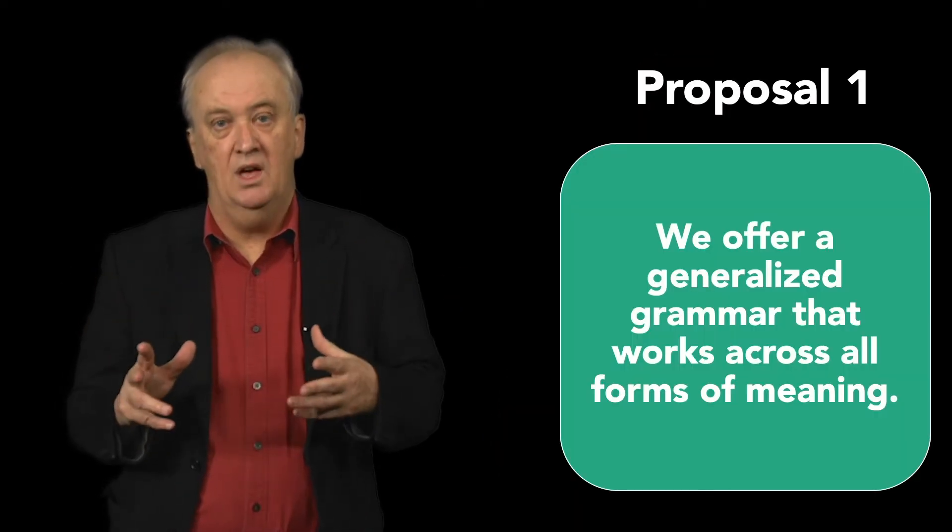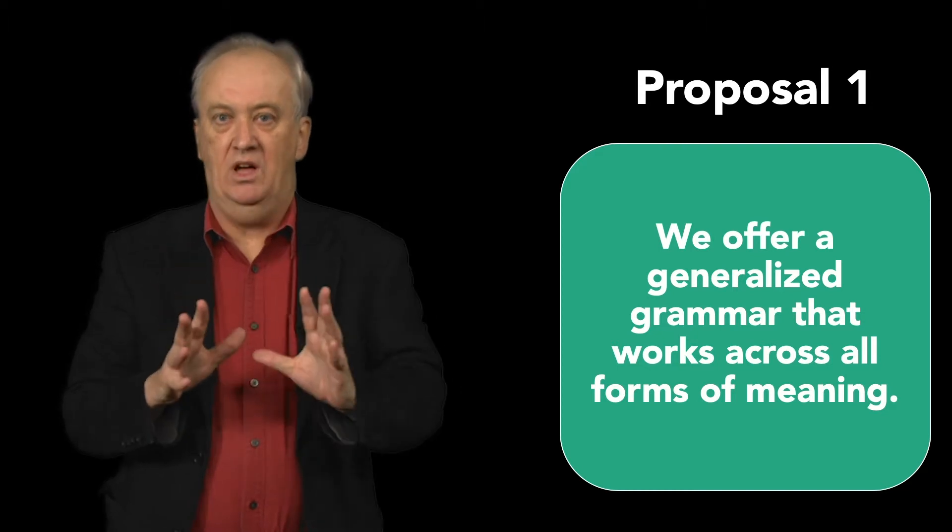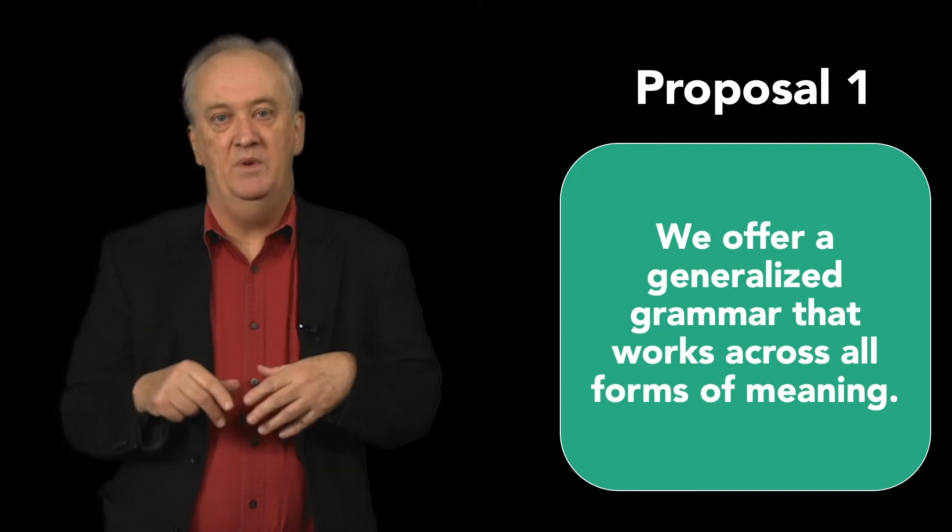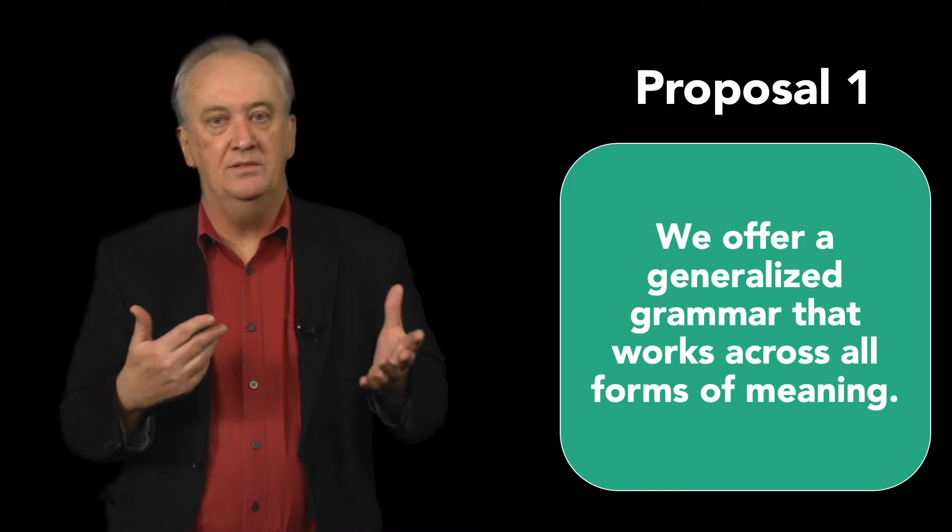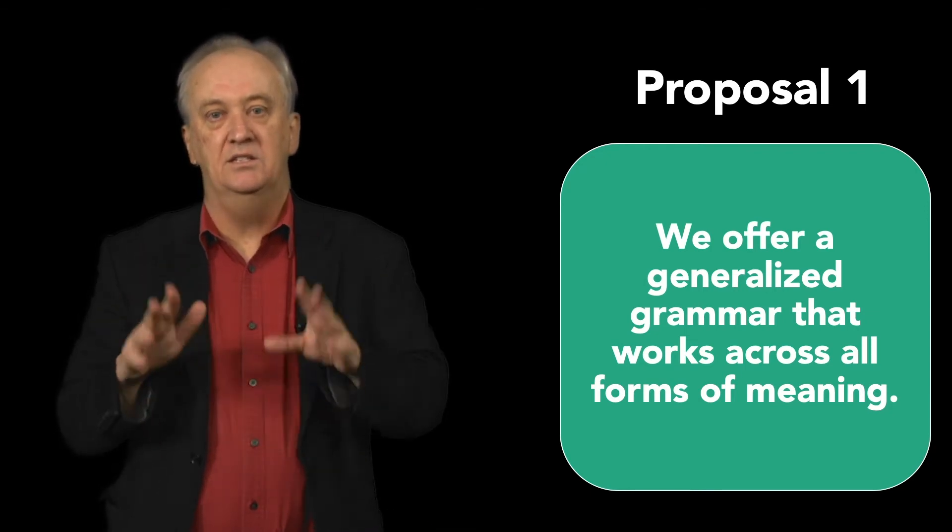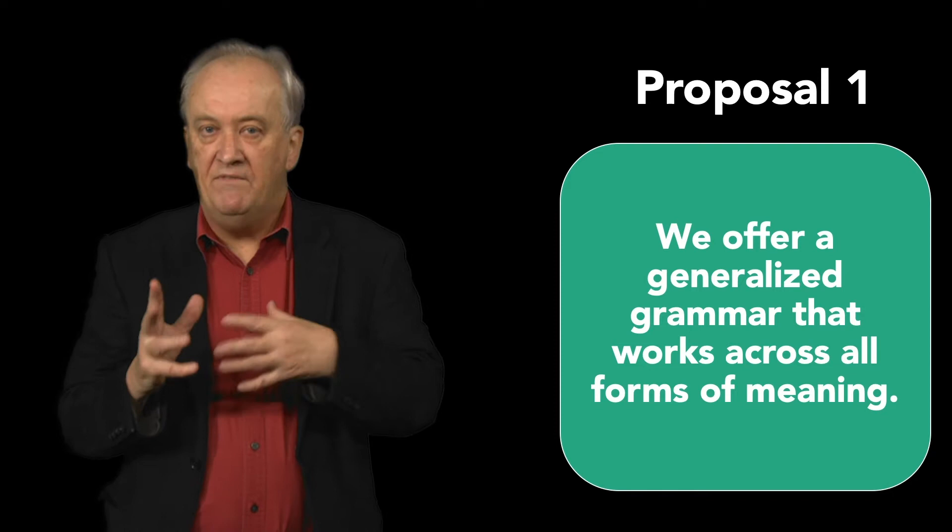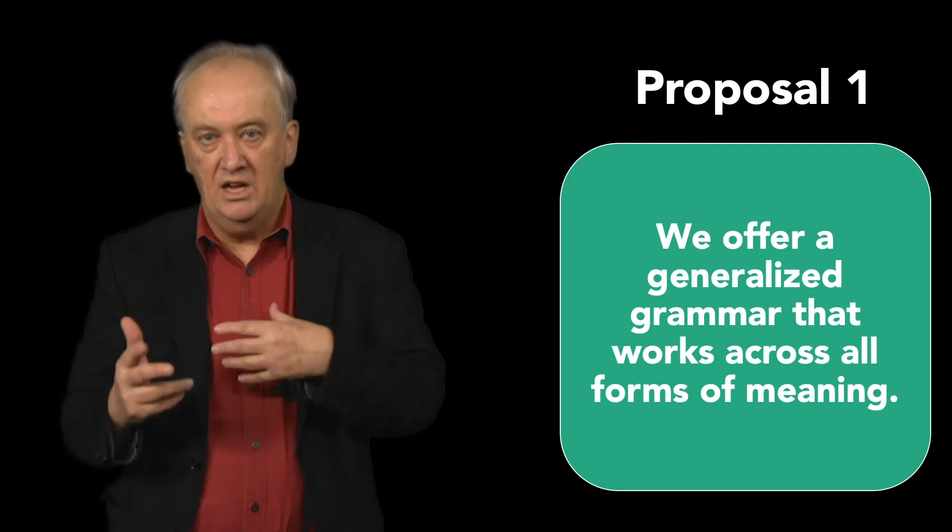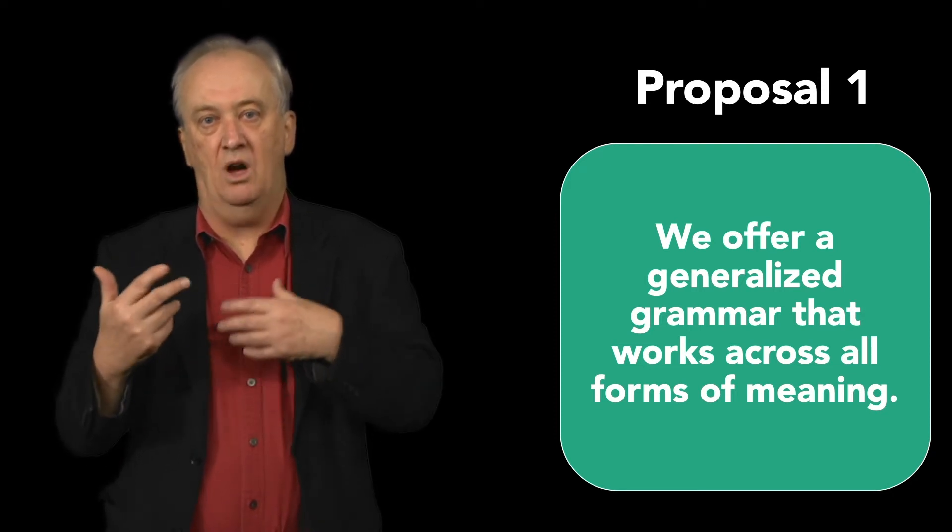Here's the first of our four proposals. We want to offer a generalized grammar that works across all forms of meaning. This is framed around the five functions of meaning that we call reference, agency, structure, context, and interest. By function we mean the orientation or the purpose of a meaning.